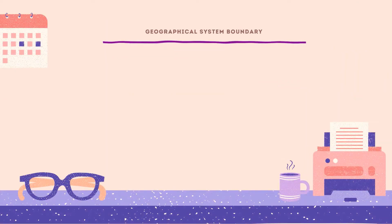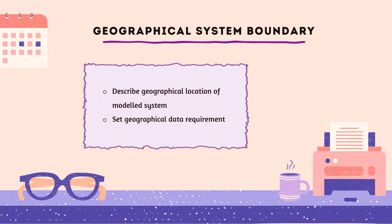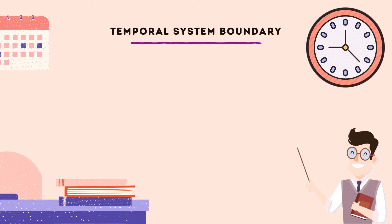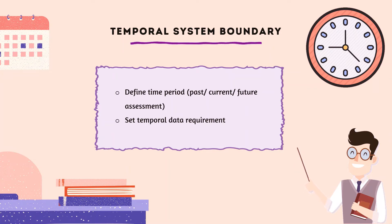Geographical system boundary: this describes the geographical location of the modeled system and sets geographical data requirements. For temporal system boundary, we need to define the time period for past, current, and future assessment, and set temporal data requirements — for example, data not older than 10 years.